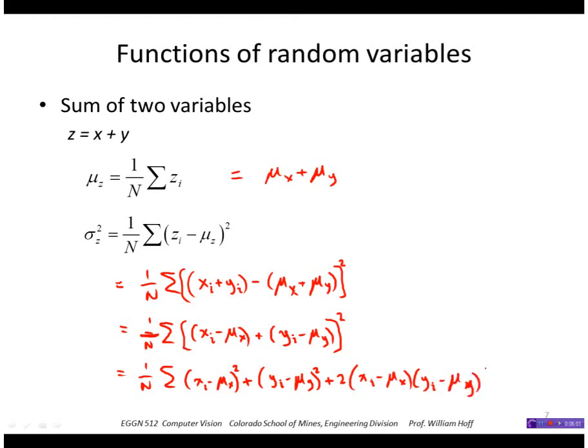And that reduces to sigma sub x squared plus sigma sub y squared plus two times the cross covariance sigma sub xy.